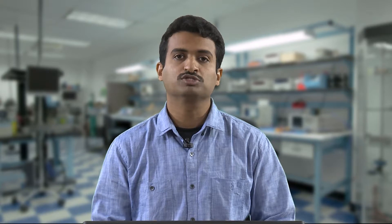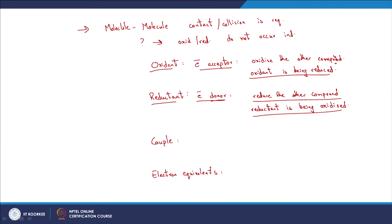Oxygen acts as the electron acceptor and glucose as the electron donor. Because our target compound is glucose, we refer to this particular reaction as oxidation — but in general, both oxidation and reduction occur simultaneously. Similar to conjugate acid-base pairs, we have a redox couple: a pair of compounds representing the before and after stages of electron transfer.